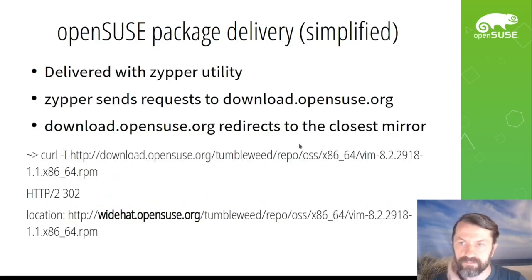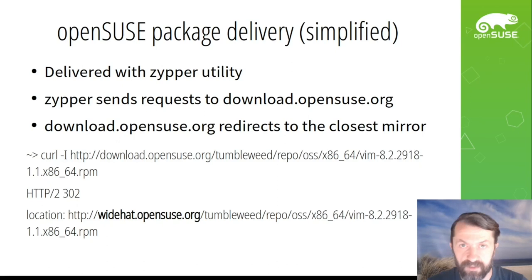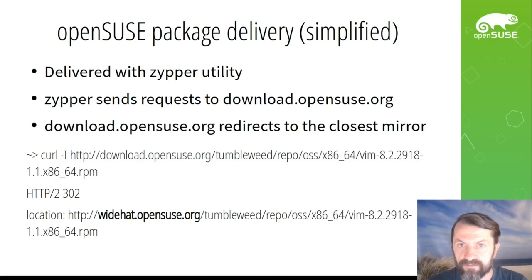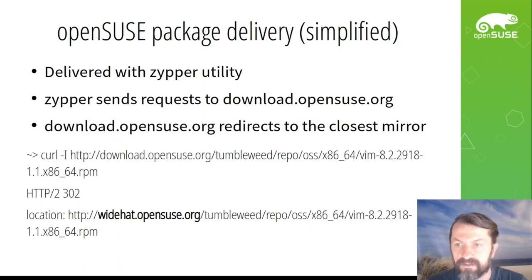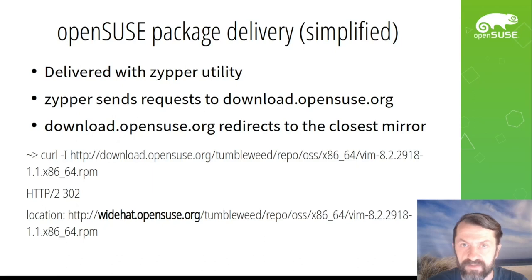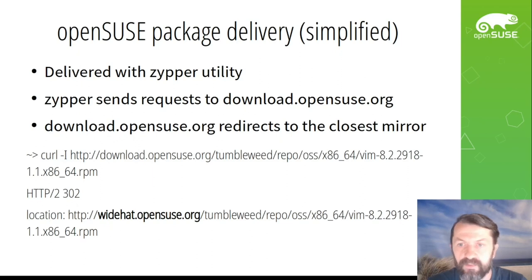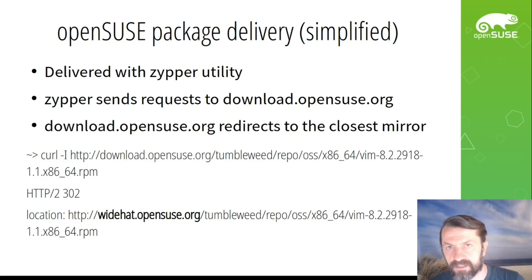Regarding OpenSUSE and package updates, they happen with the zypper utility, and zypper communicates with download.opensuse.org. Below you can see a request very similar to what zypper does — you can try it in your command line. In this case, download.opensuse.org replies with a redirection status code, so the request is redirected to a mirror, in this example a German mirror. If you try the same request in your country, you can be redirected to another mirror that is close to you.